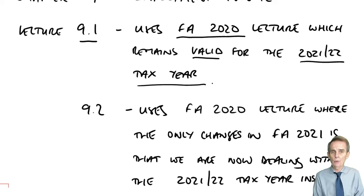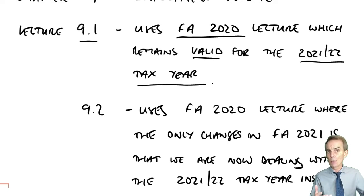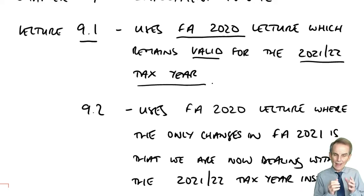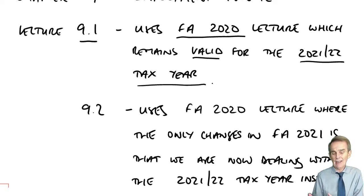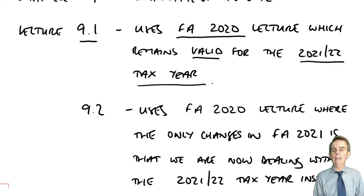One part of this first lecture deals with allowable deductions from whatever the employment income — the salary, the wage, the bonus, the accessible benefits — and what those allowable deductions might be: what is allowable as compared to what isn't. But then we have to look at the top line, the employment income itself, prior to those deductions.